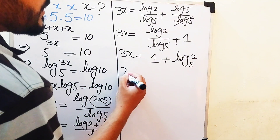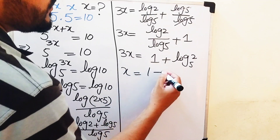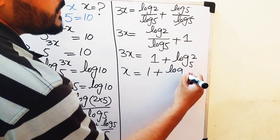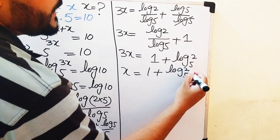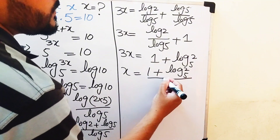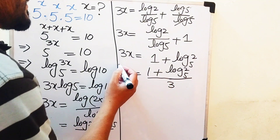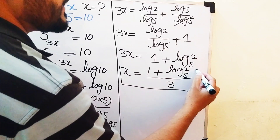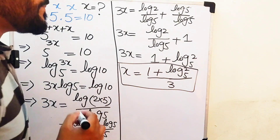We rewrite log 2 over log 5 as log base 5 of 2. So 3x equals 1 plus log base 5 of 2. Moving the 3 to the right-hand side, we get x equals (1 plus log base 5 of 2) divided by 3. This is the final value of x.